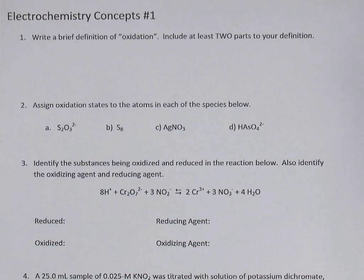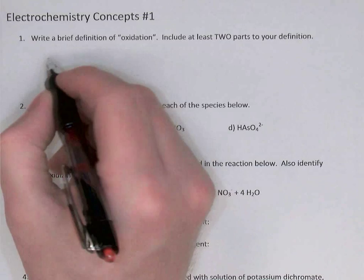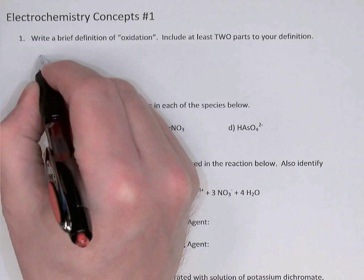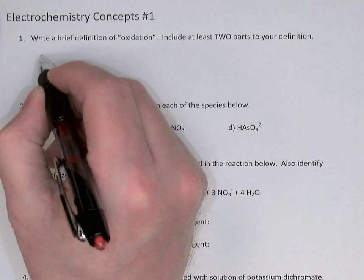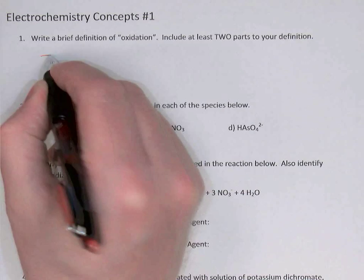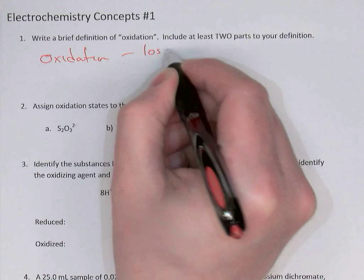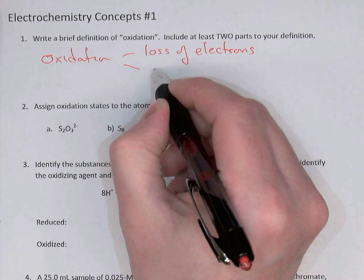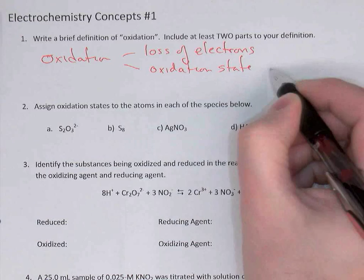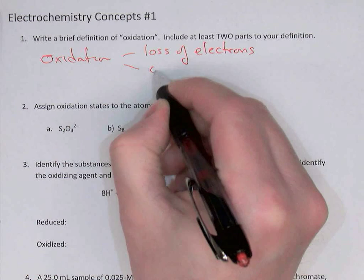The first question was asking you to define oxidation and include at least two parts in the definition. We gave four different ways of defining oxidation and reduction, but the two most important: oxidation is the loss of electrons. If an atom or species is losing electrons, then its oxidation state increases. That's the other part of the definition.